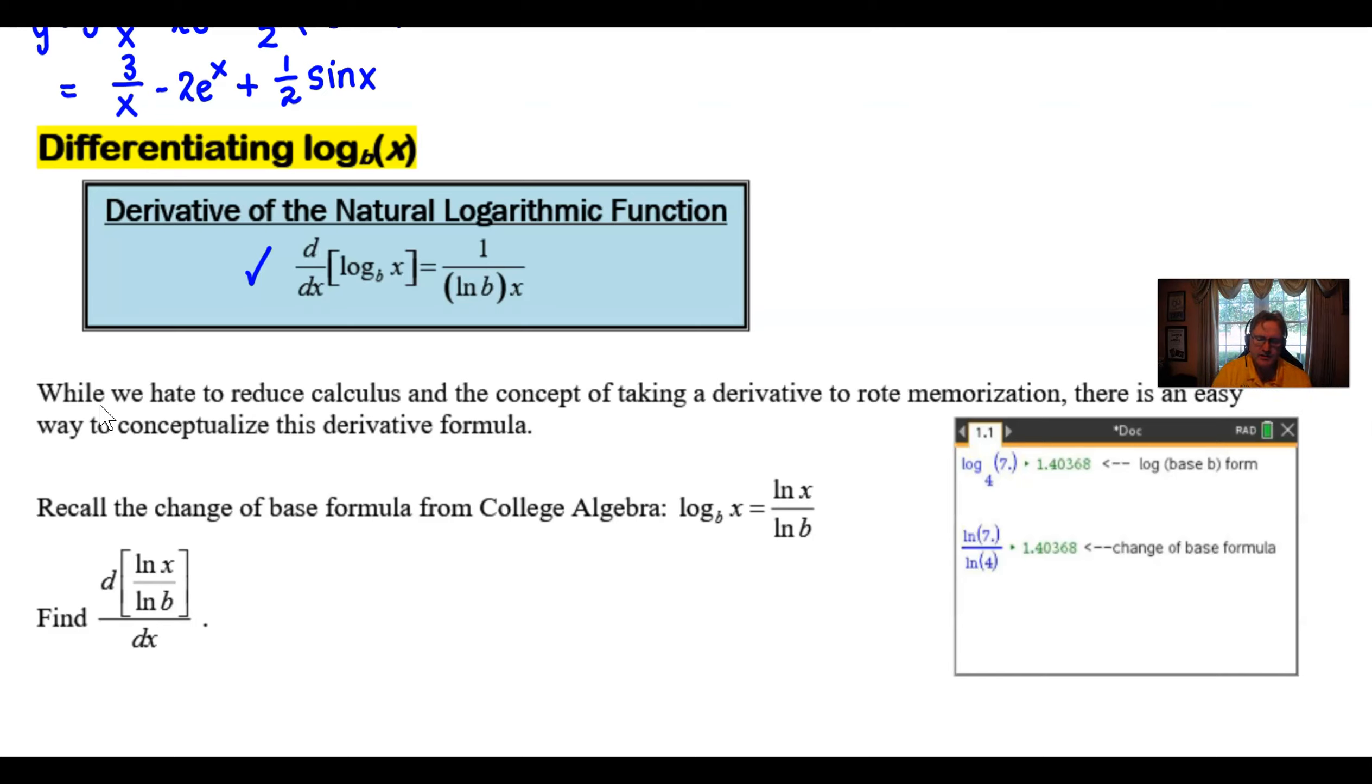So what we're going to do is maybe investigate this a little bit. I hate to just generalize calculus as a formula and say, here it is, use it, memorize it. But it's not a very difficult connection to make. I want you to recall a change of base formula. You may have learned it in a college algebra class. Maybe it was your pre-calculus class. It says that the log base b of x is equal to the natural log of x over the natural log of b. Basically, it's a way to take a logarithm of any base and write it as a natural log quotient.